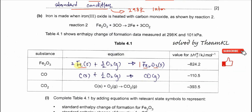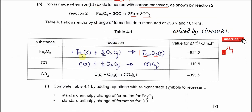For part b, iron is made when iron(III) oxide is heated with carbon monoxide as shown in reaction 2: one mole of iron(III) oxide reacts with carbon monoxide to form iron and CO₂. We will use the enthalpy of formation values to fill in the table first, with the equations for the formation of iron(III) oxide, CO, and CO₂. The ΔHf values are given and will be used later for the calculation.